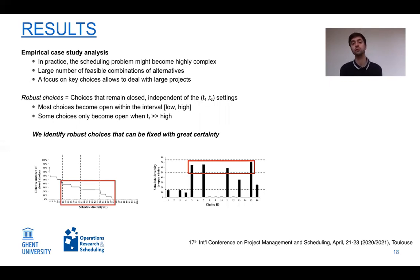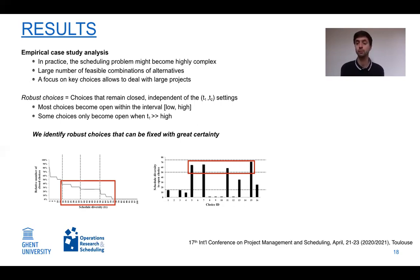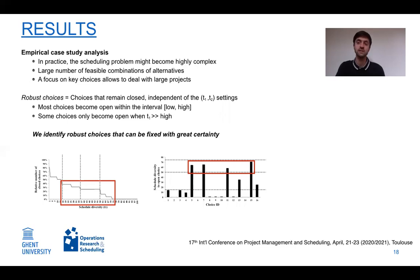We also observed robust choices — choices that remain closed independent of the settings of T1 and T2. Most choices eventually become open as schedule diversity or choice frequency increases, but some could only be forced open at very high, atypical values of T1. In other words, we could identify robust choices for which alternatives were fixed with high certainty.